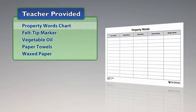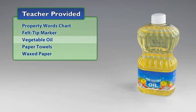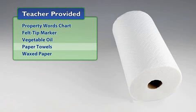You will also need to provide the chart Property Words, Felt Tip Marker, Vegetable Oil, Paper Towels, and a Roll of Wax Paper.